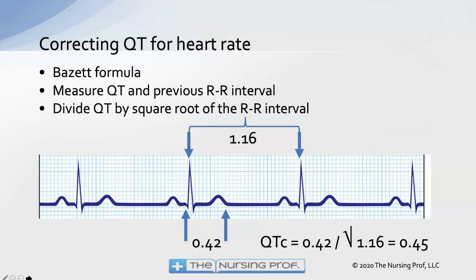Think about it in the gun analogy: the faster you're shooting, the faster you have to reload. The way we correct for this is using the Bazette formula for the corrected QT — QTc. You take the QT interval and divide it by the square root of the R-to-R interval. So here we have a QT interval of 0.42 and an R-to-R interval of 1.16, which gives us a corrected QTc of 0.45.